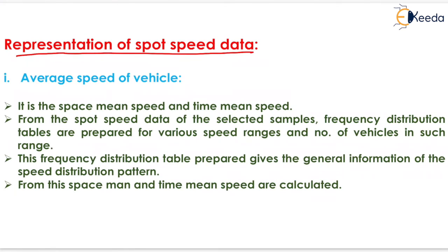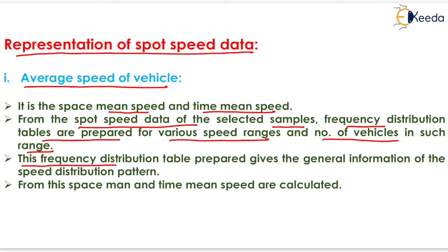The next topic is the representation of spot speed data. The first one is average speed of vehicle. It is the space mean speed and time mean speed. From the spot speed data of the selected samples, frequency distribution tables are prepared for various speed ranges and number of vehicles in such range. This frequency distribution table gives the general information of the speed distribution pattern. From this, space mean and time mean speed are calculated.